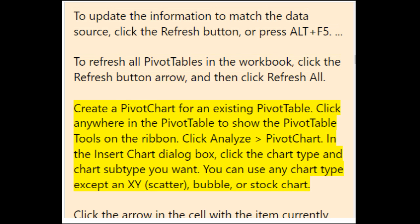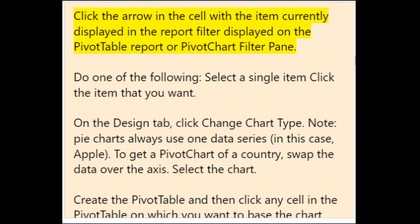To create a pivot chart for an existing pivot table, click anywhere in the pivot table to show the PivotTable Tools on the ribbon, then click Analyze > PivotChart. In the Insert Chart dialog box, click the chart type and subtype you want. You can use any chart type except XY scatter, bubble, or stock chart. To filter, click the arrow in the cell with the item displayed in the Report Filter on the pivot table or pivot chart filter pane, then select a single item.